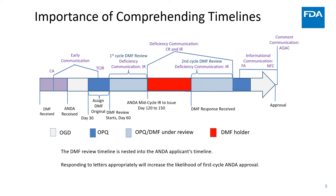We will look at the purpose, content, and timing of key letters sent by our Division throughout the DMF review process. There are three general categories of letters: early communication, deficiency and common communication, and informational communication. As we are part of the ANDA's GDUFA timeline, it is important that you respond to DMF letters promptly to not hold up the approval of your referencing application. Responding to letters appropriately will increase the likelihood of a first cycle ANDA approval.